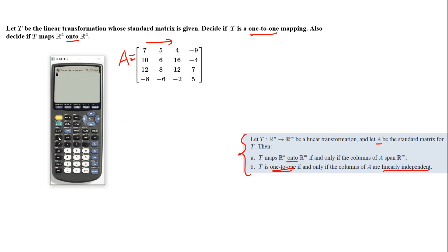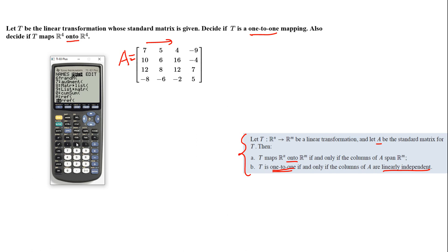Now we want to change this into reduced row echelon form. Press second, x-inverse to go back to the matrix menu. Move to the Math tab and scroll down — you'll find RREF. Select it, then go back to the matrix menu and select matrix A and press Enter.